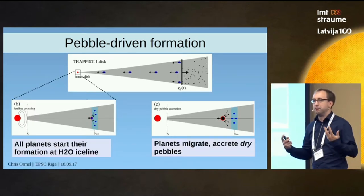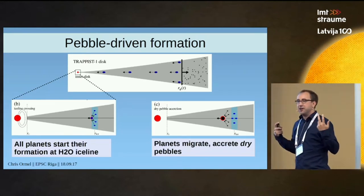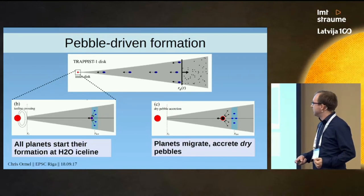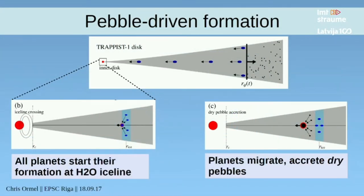I'm now going to very quickly describe our scenario, just showing you the highlights. The first step is when these pebbles drift all the way into the inner disk. The inner disk is the region where the ice line is located. At the ice line, particles grow in terms of mass because they condense a lot of vapor. We argue that is where you form the planetesimals and also your planetary embryos. They then continue their evolution towards the star — they migrate inwards. But once they cross the ice line, they can still accrete pebbles, but now the pebbles are dry. So this explains how you can get the terrestrial composition of these planets.